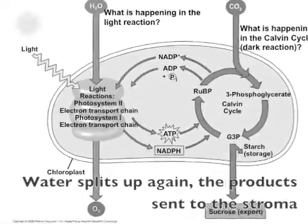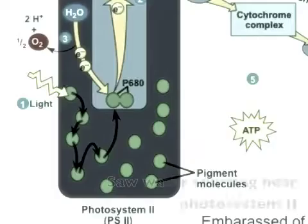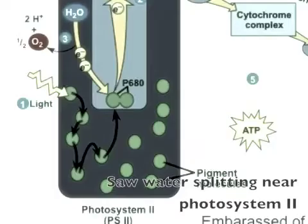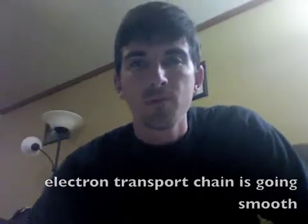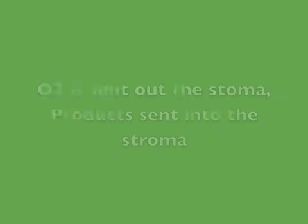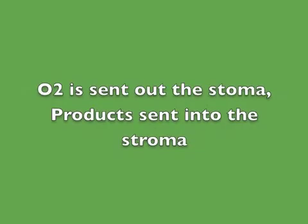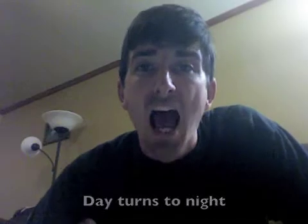Water is split up again. New products are sent to the stroma. Looking at a chloroplast today — saw water splitting near photosystem 2, electron transport chains running smooth. Light reactions going on, O2 is sent out, products sent into the stroma.